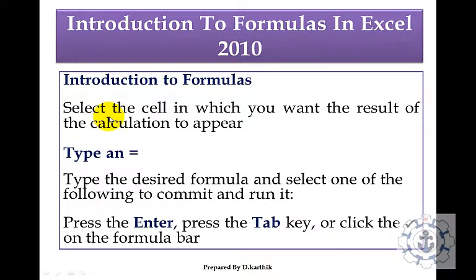Select the cell in which you want the result of the calculation to appear and type an equal sign. Type the desired formula and select one of the following to commit and run it: press Enter, press Tab key, or click the right symbol on the formula bar.